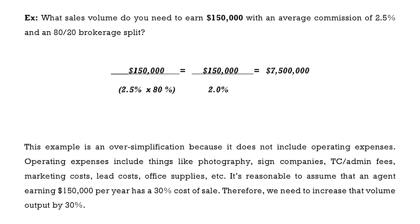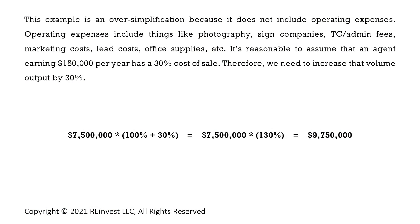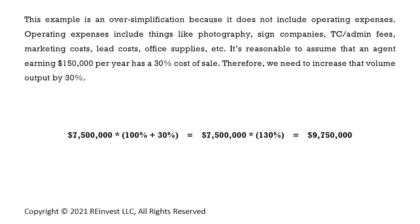That doesn't factor in things like a transaction coordinator, photographer, marketing costs, sign companies, admin fees, and so on. A good rule of thumb is that you have roughly a 30% cost of sale as a real estate agent — about 30 cents of every dollar goes out the door in expenses, so you keep about 70 cents. So we take the $7.5 million from above and multiply it by 130%, giving us $9.75 million — you basically have to sell $10 million, chop off 30% for expenses, and you're left with $150,000.